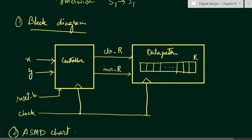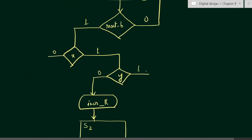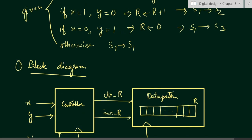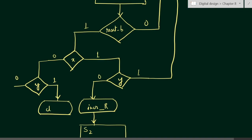Otherwise, when x equals 1 and y equals 1, control goes back to state s1. On the left side where x equals 0, we add a decision box for y. When x equals 0 and y equals 1, we use a conditional output box to clear register r (clr_r) and go to state s3.